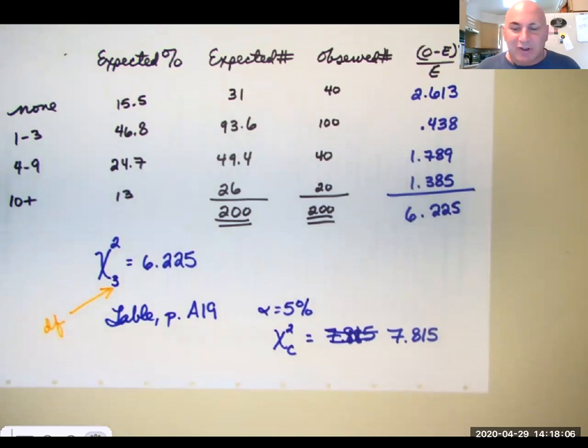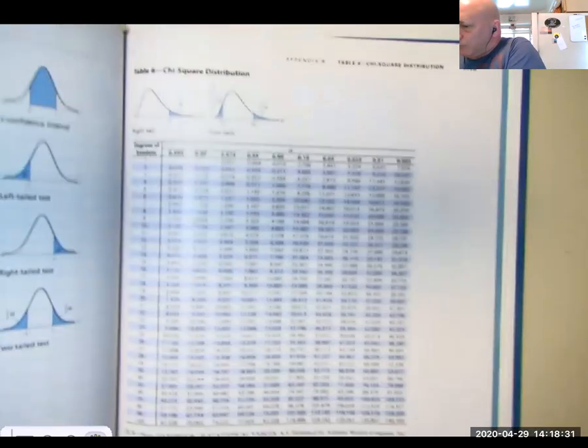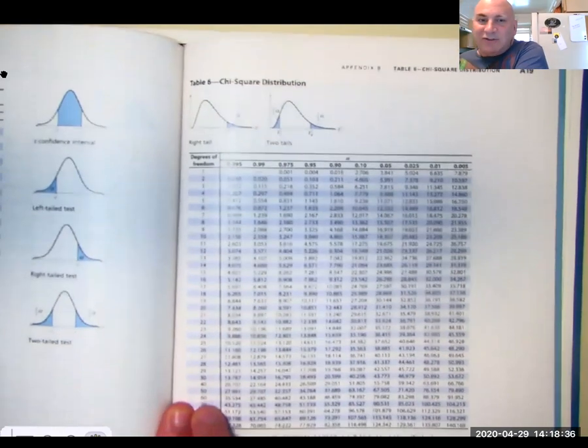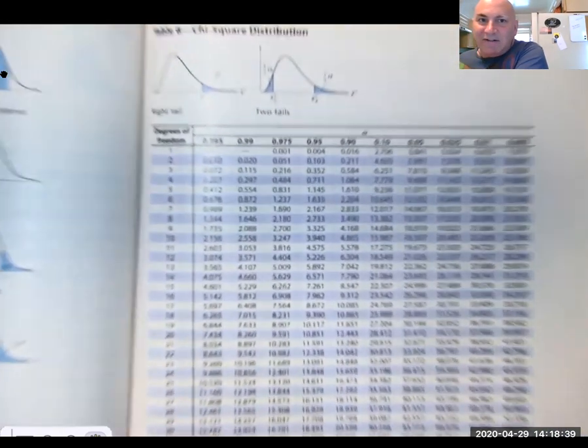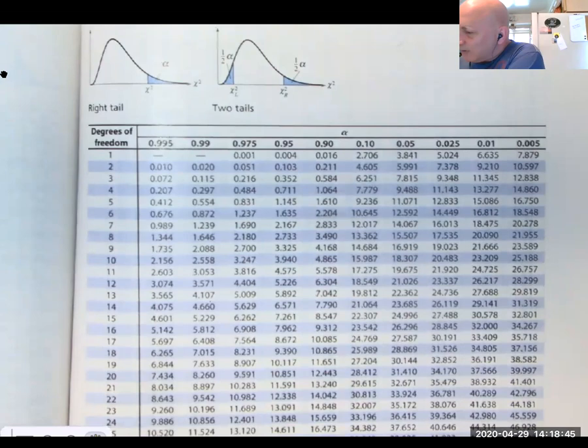So we look in your table on page A19. And I didn't plan this out well. I didn't notice that I had to get to the book again. We'll go to the back of the book. A19, that is a chi-squared table. And a chi-squared table is read kind of like a t-table. All the values in the middle of the chi-squared table are critical values.